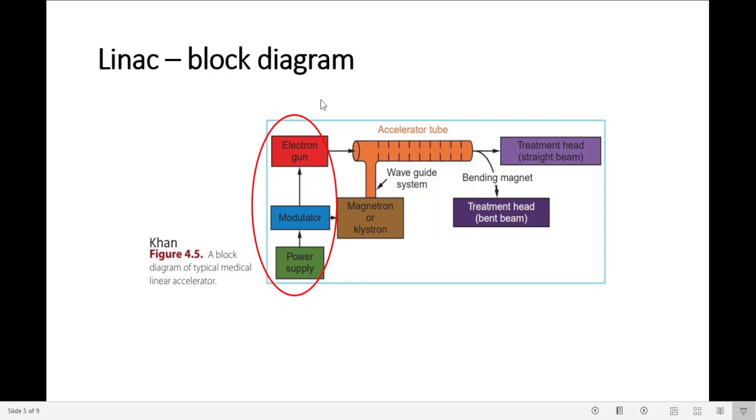So let's focus on the left side here. We have a power supply, a modulator, an electron gun. The power supply provides DC power to the modulator. The modulator delivers high voltage pulses to the electron gun and to the high power oscillator system, which is this one here. The electron gun produces the electrons to be injected into the accelerator tube.